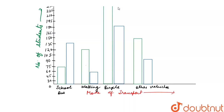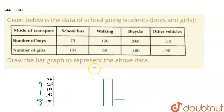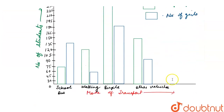We will also write the legend showing the colors used to represent the data. Green is representing number of boys, and blue is representing number of girls. So this is our representation of the above data in a bar graph.